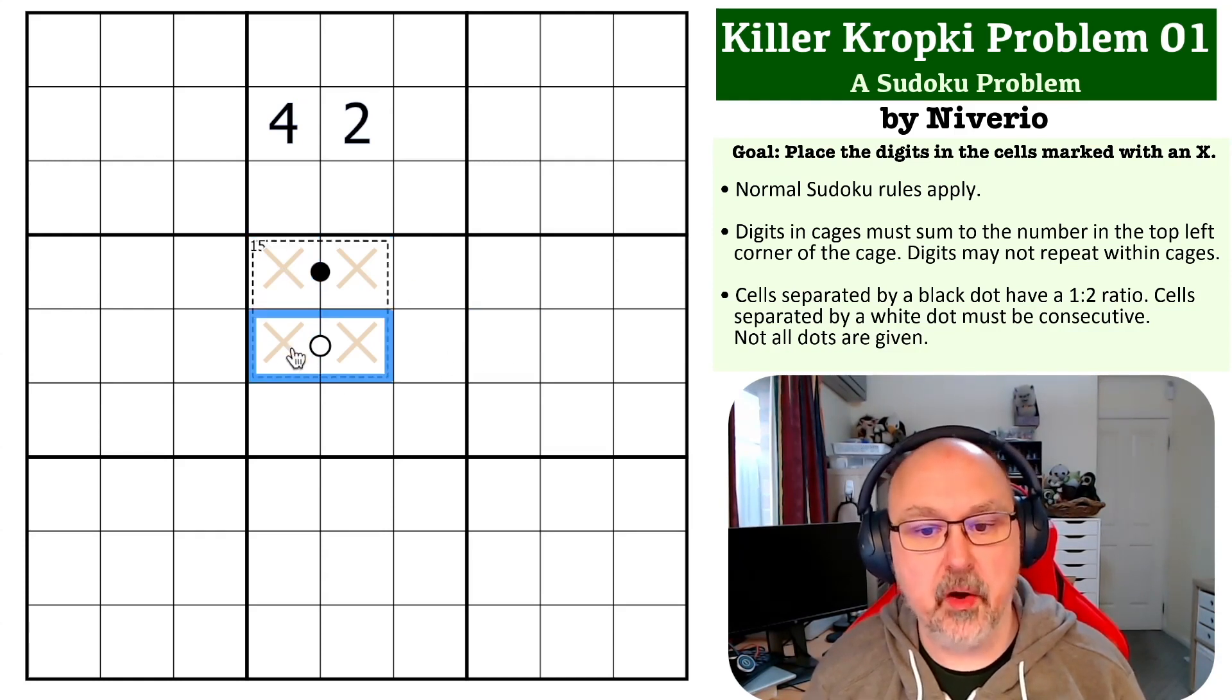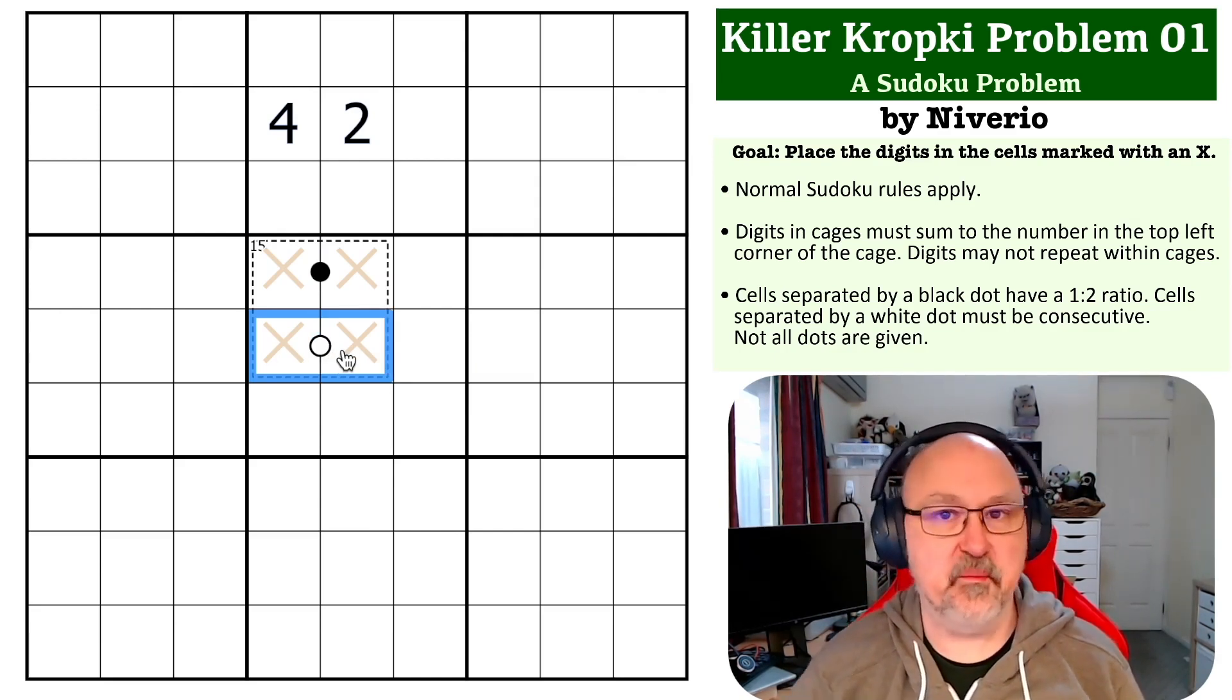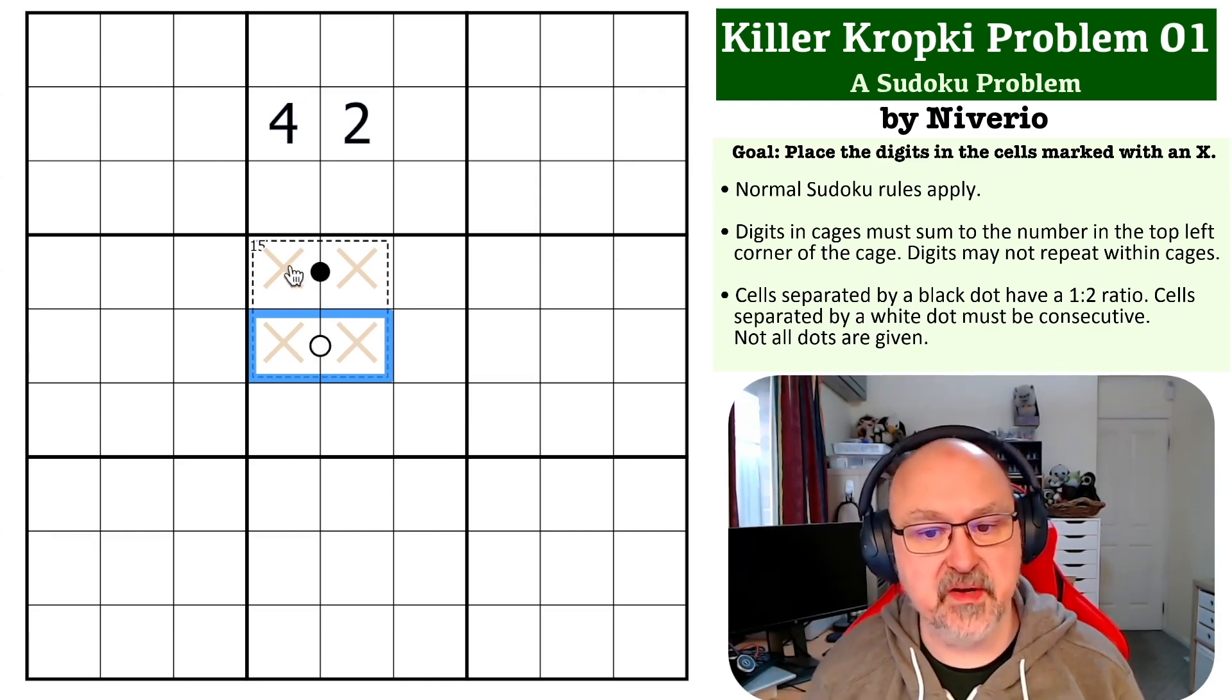What we know is, because two consecutive digits will contain an even and an odd number, there's no way of putting two odd numbers together consecutively or two even numbers consecutively. This will be an odd number, so the total of this dot must be even.